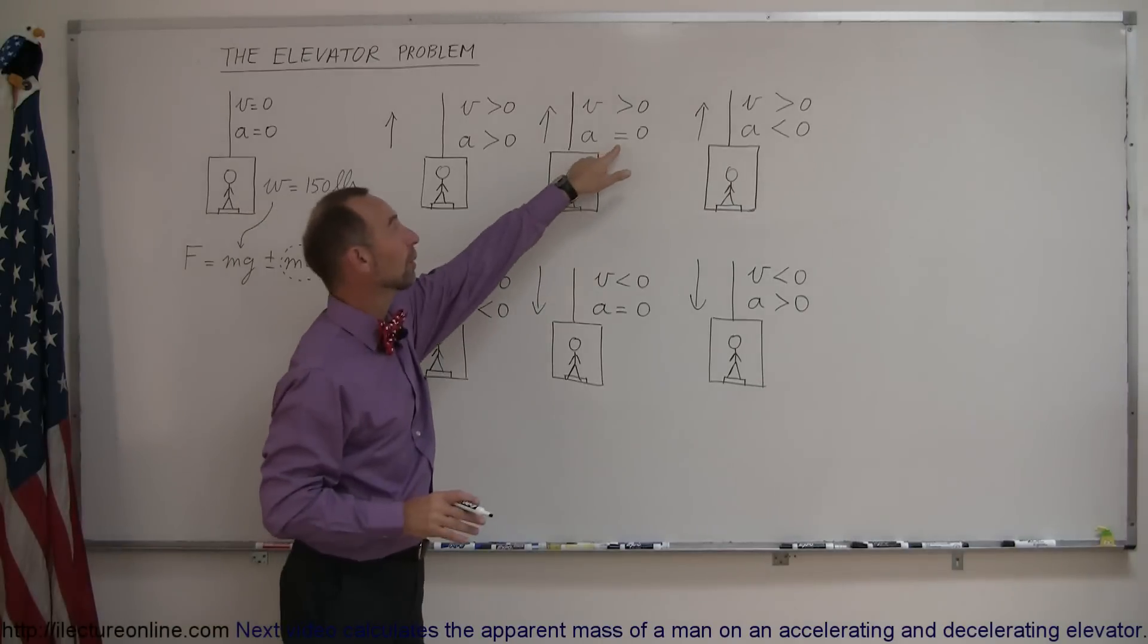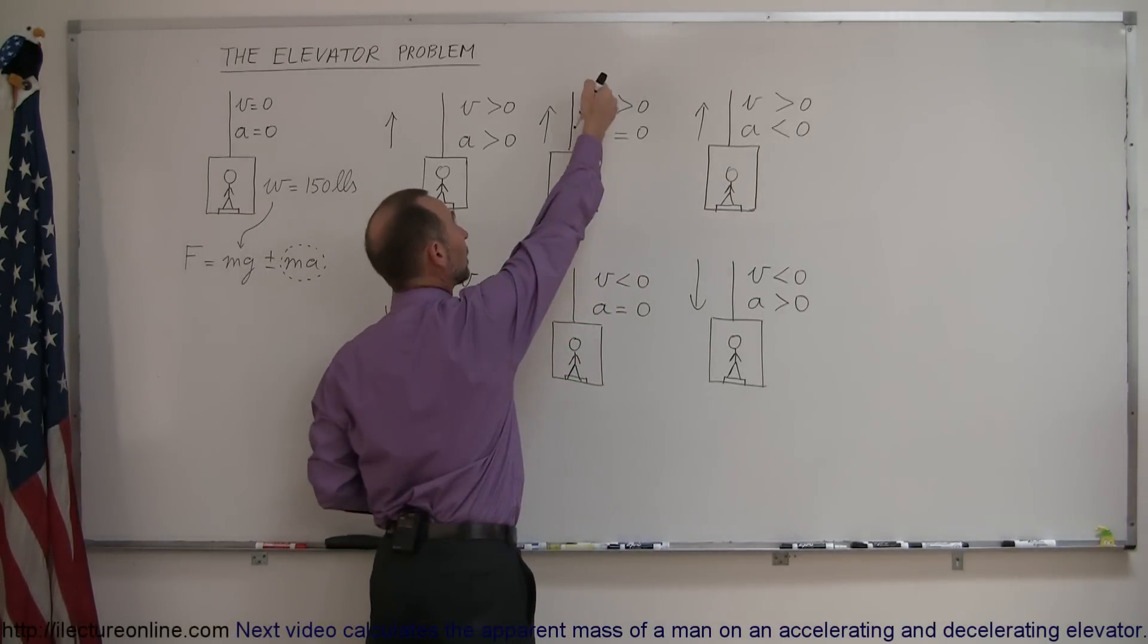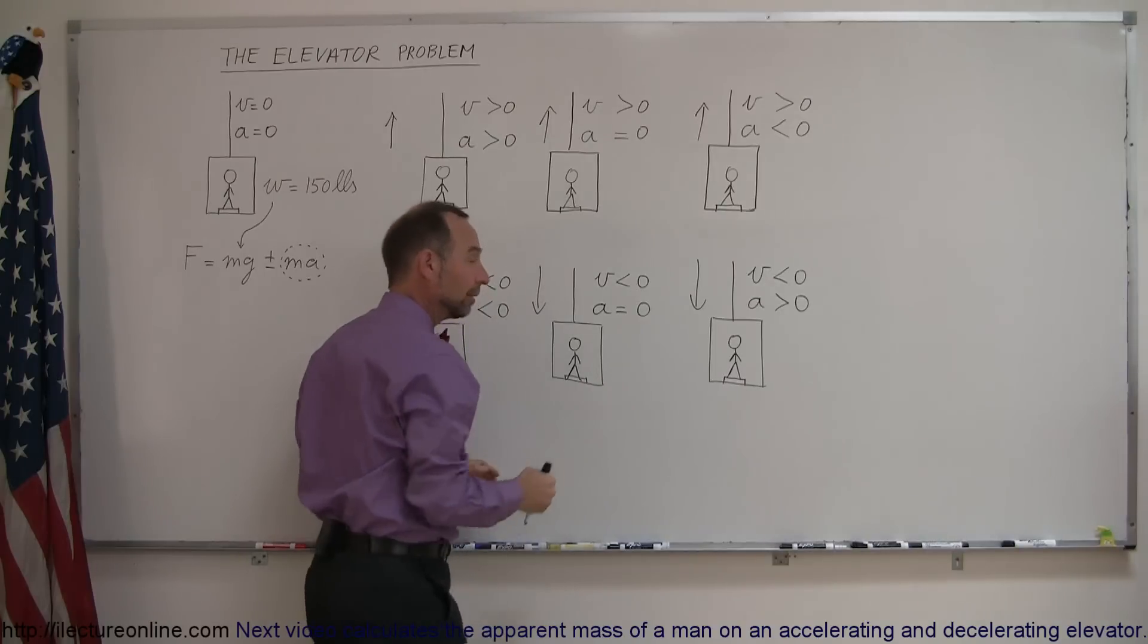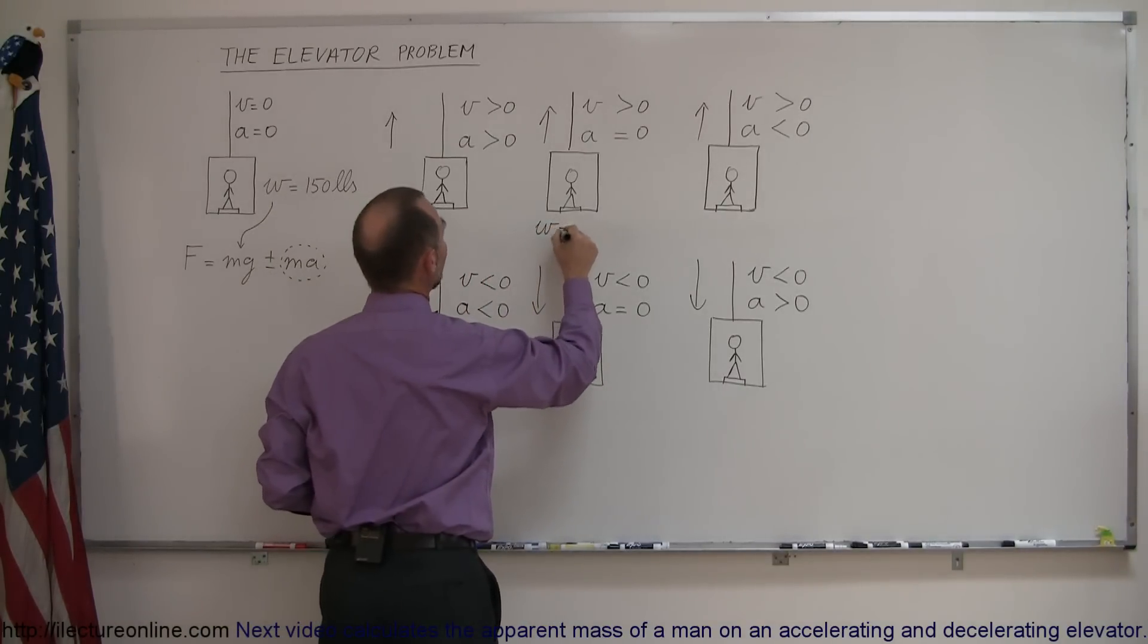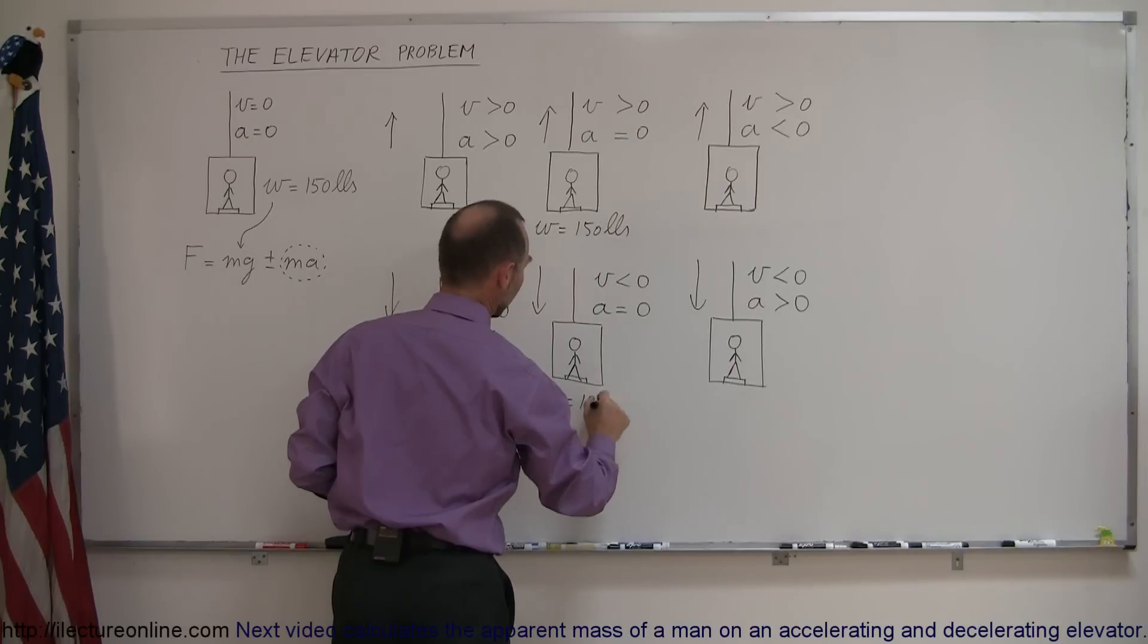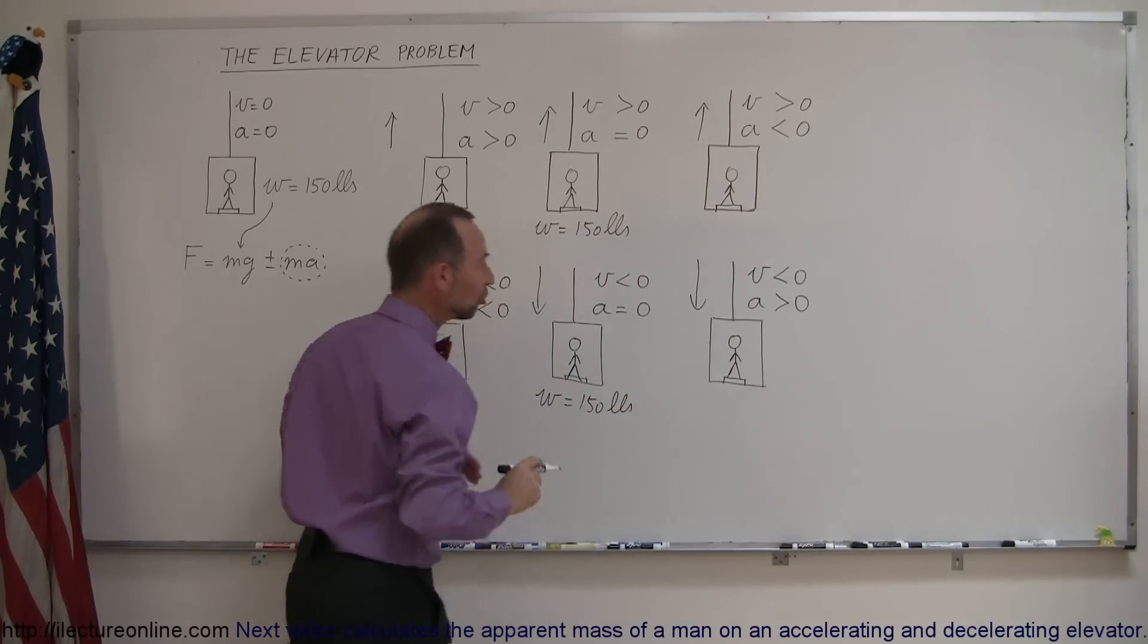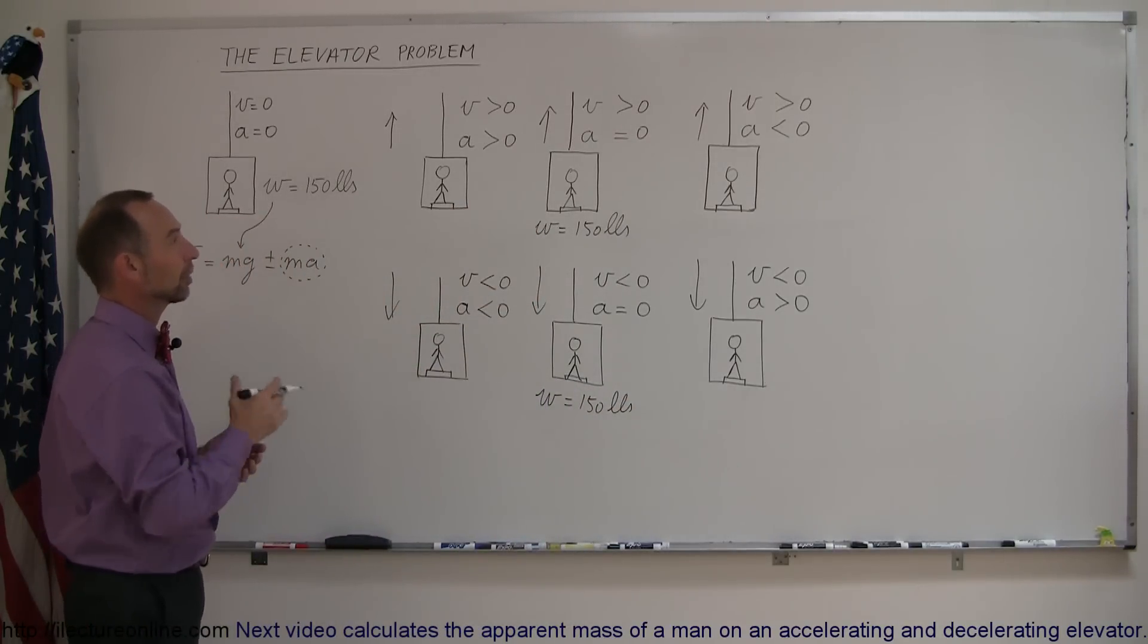So in the cases over here where the acceleration is zero, even though the elevator is moving upward here and moving downward over here, as long as they're at a constant speed, the weight over here would also be 150 pounds. No difference. Weight equals 150 pounds. There's only a change in the weight on the scale if the elevator is actually accelerating upward or downward.